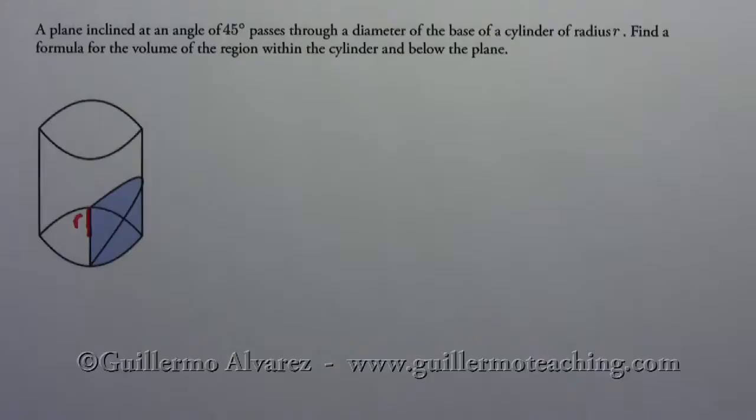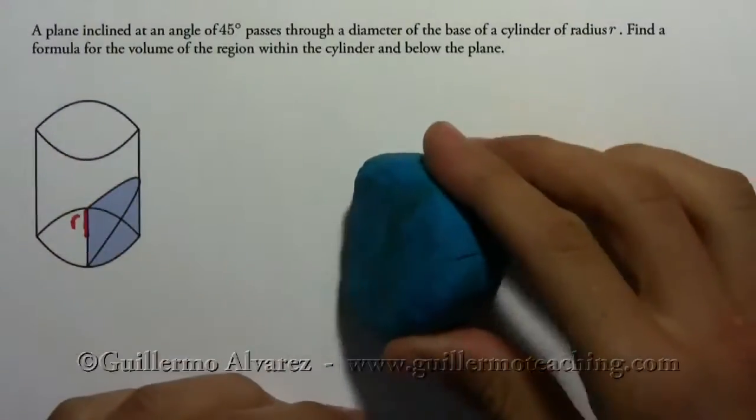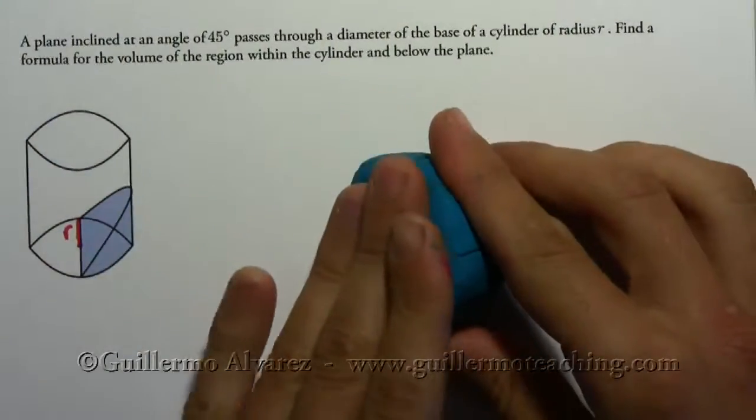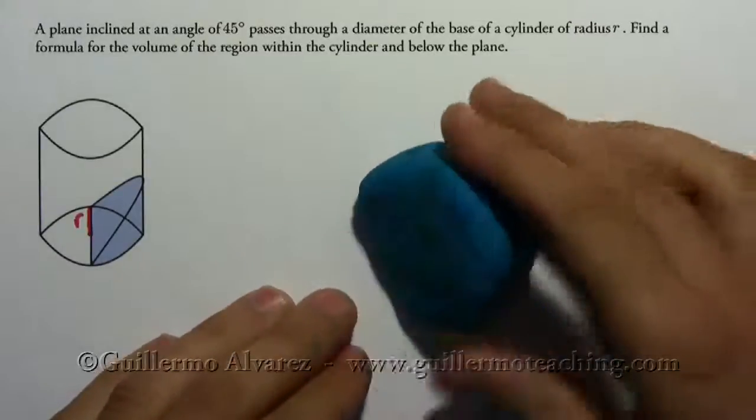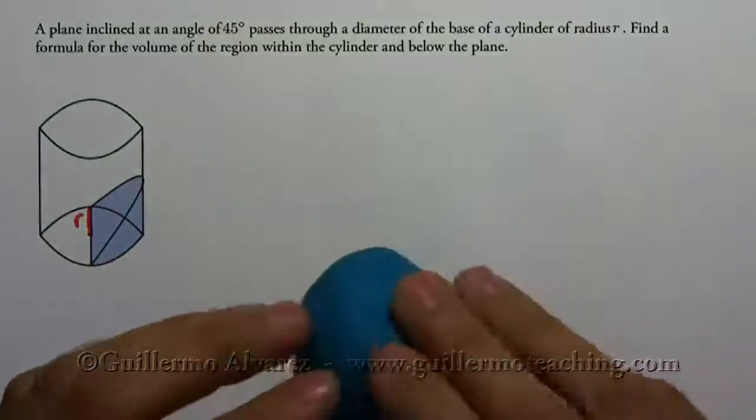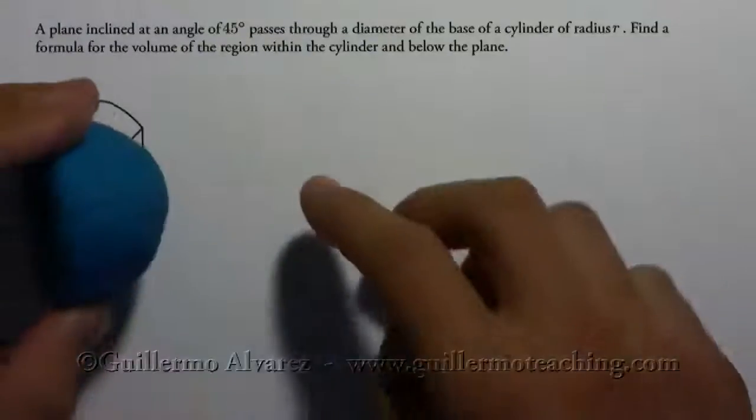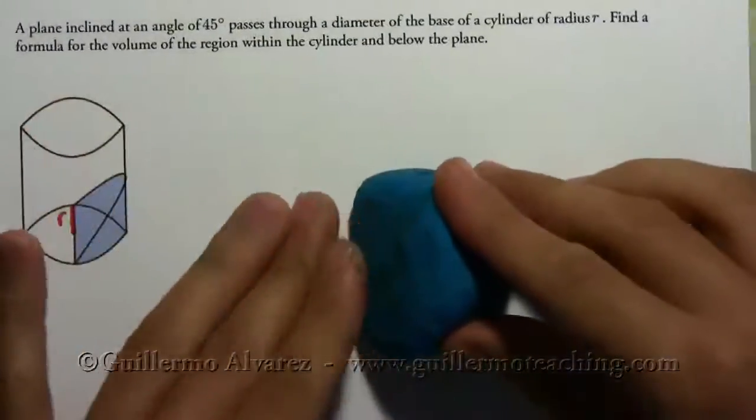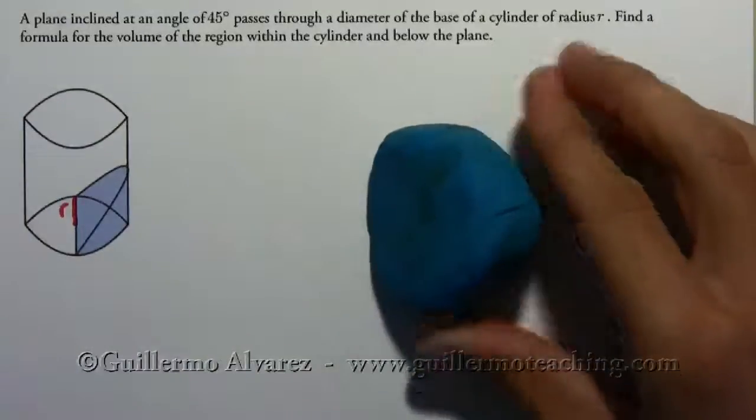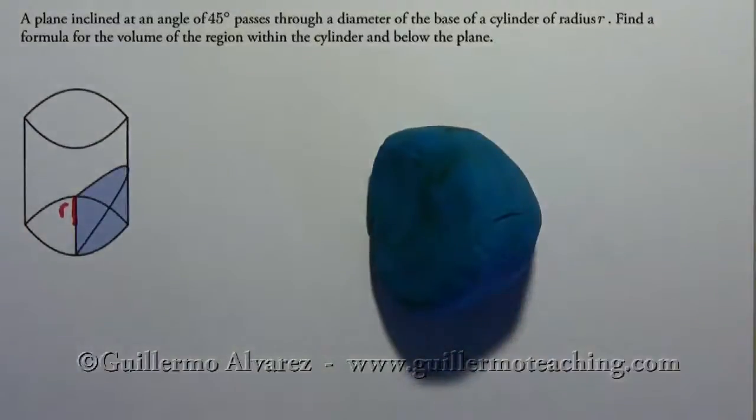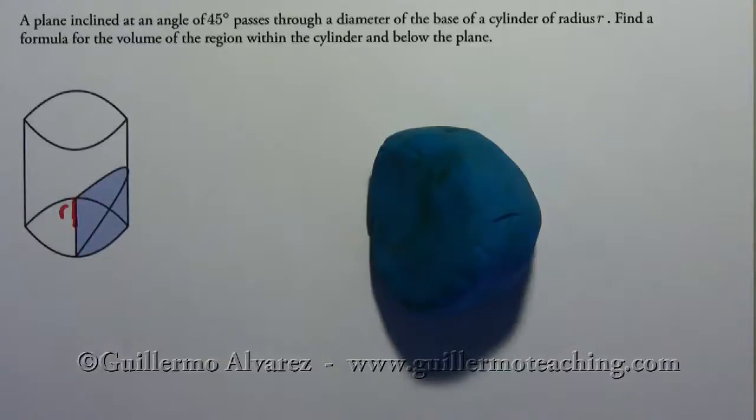So what we need to do first off is figure out what our cross-section is. So I made a little small model here, a Play-Doh model. This is supposed to be the wedge, and so this is the round cylinder part, and this is the bottom. This is supposed to be a 45-degree angle. Now if we take a slice of this, I lost my slicer. Hold on a second, let me get my slicer. Okay, I'm back with my slicer.